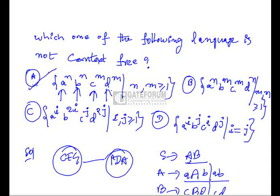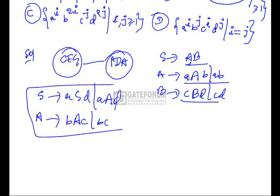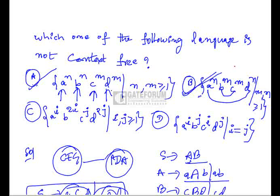For option B, a^n b^m c^m d^n — here a's and d's are equal, and b's and c's are equal. We can define a grammar: S → aSd | Aad, A → bAc | bc. This grammar exists for option B, and since a CFG exists it can be converted to a PDA. So option B is also a context-free language.